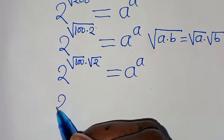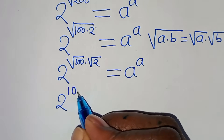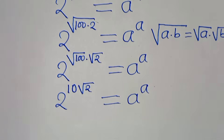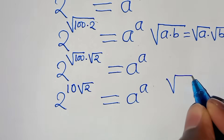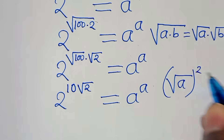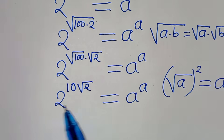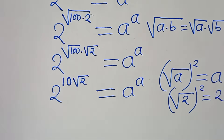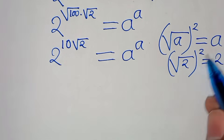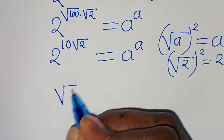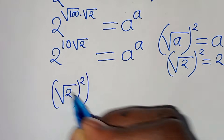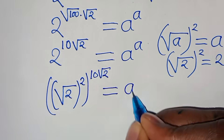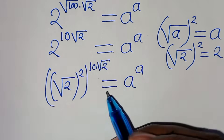Since square root of 100 is 10, we have 2 to the power of 10 times square root of 2, equal to a to the power of a. Now, since square root of a raised to the power of 2 equals a, we can express 2 as square root of 2 to the power of 2. Substituting, we get square root of 2 raised to the power of 2, then raised to the power of 10 square root of 2, equal to a to the power of a.